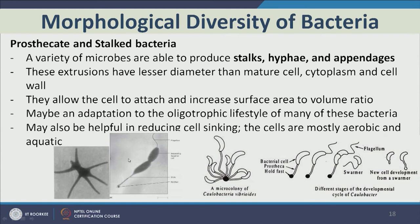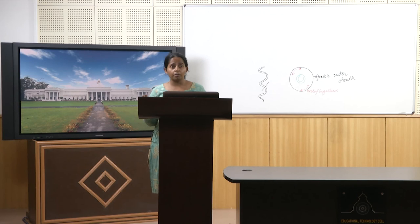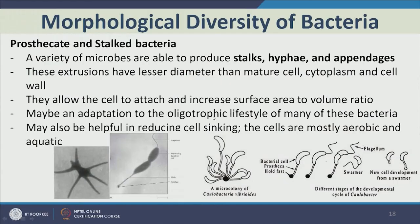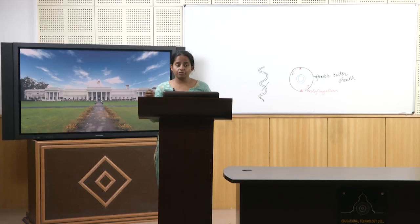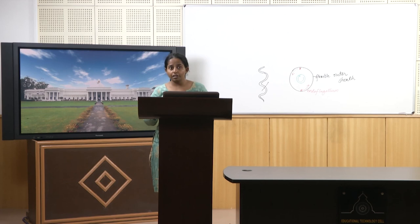Next are prosthecate and stalk bacteria — certain bacteria that produce stalks, hyphae, and appendages to help them attach. These extrusions are unique because they have a smaller diameter than the main cell body but still contain cytoplasm and cell wall, increasing the surface area to volume ratio. They allow cell attachment and may be an adaptation to oligotrophic lifestyle. Increasing surface area to volume ratio provides more surface for nutrient uptake, and may also help reduce cell sinking — if surface increases, upward thrust of water increases, important for aerobic aquatic cells that need to stay afloat.